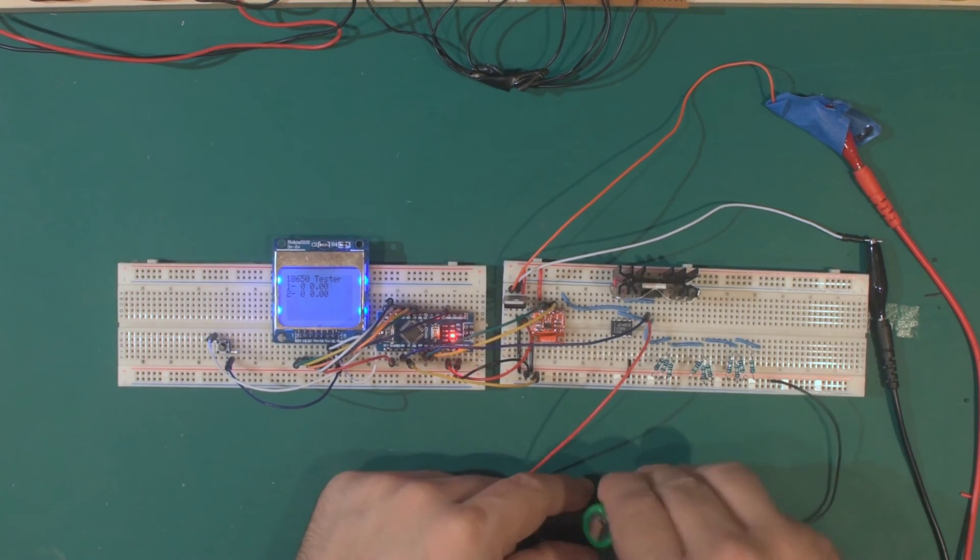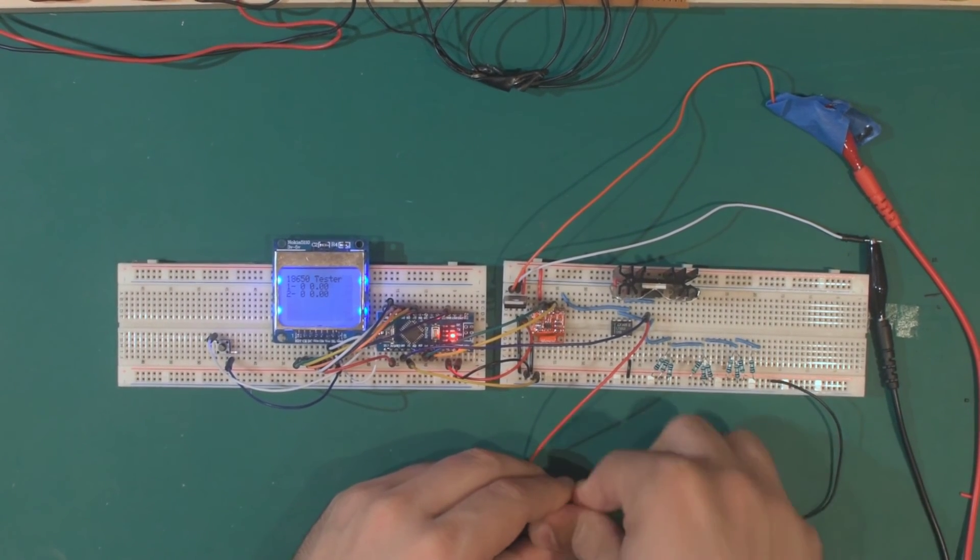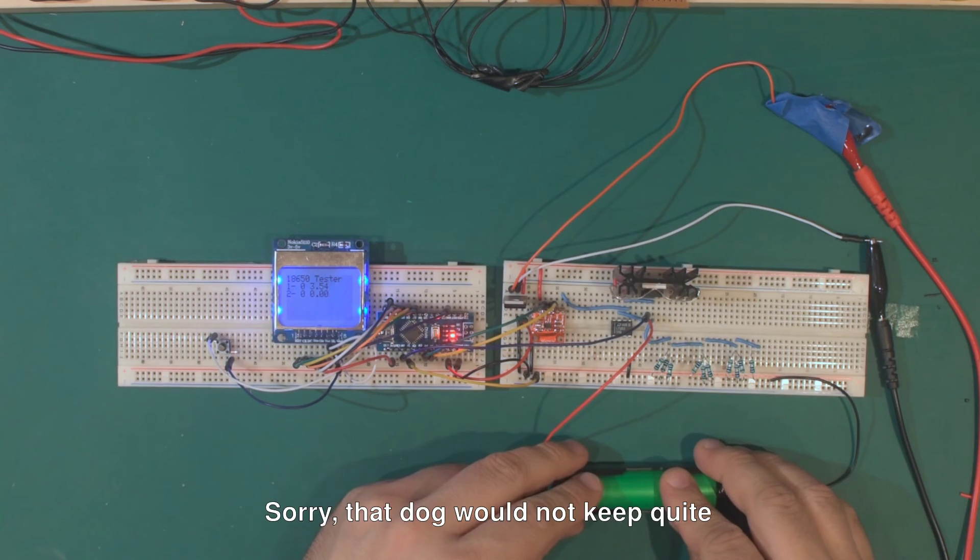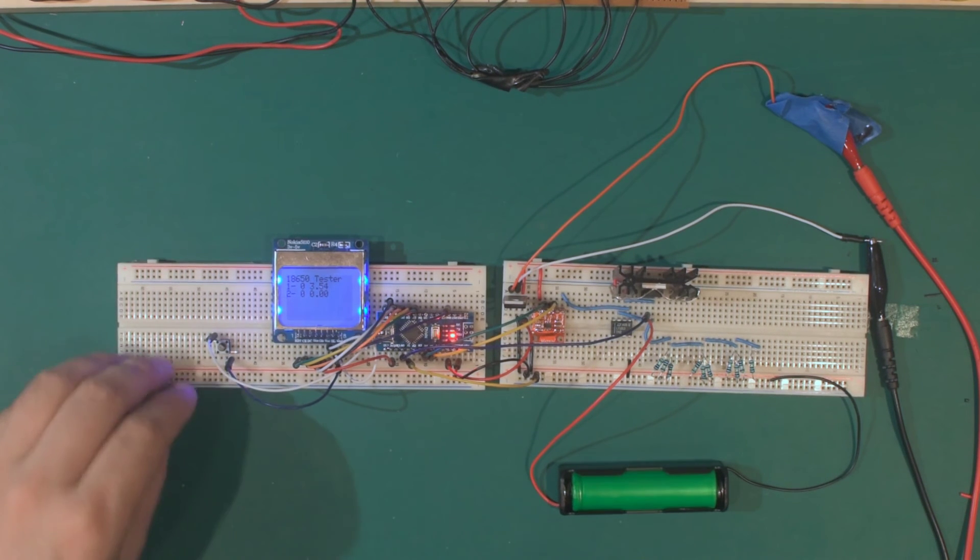So if we take the battery, place it in, fantastic. This is an almost dead cell, so it's at 3.54 volts without any load. And we can again push the original button. The discharge will begin.